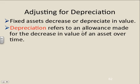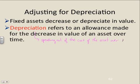Depreciation refers to an allowance made for the decrease in value of an asset over time. What I like to say is depreciation is the spreading out of the cost of the asset over time. So if it costs you $12,000 and you had it for 12 years, that's basically $1,000 per year — so we're spreading out the cost of the asset.